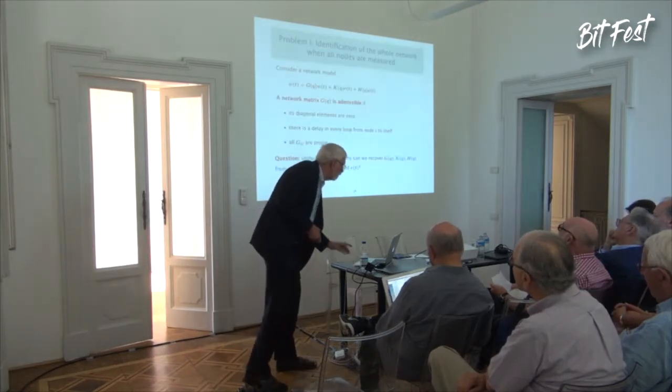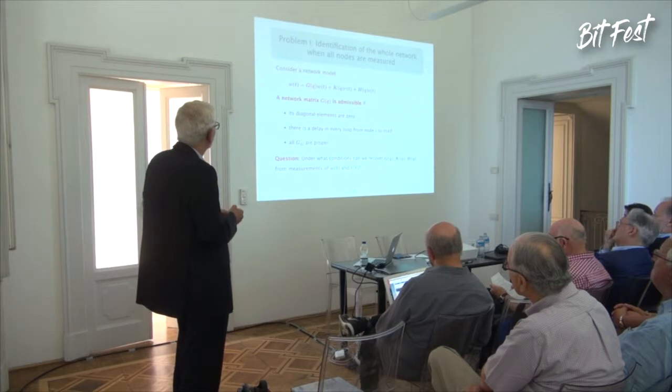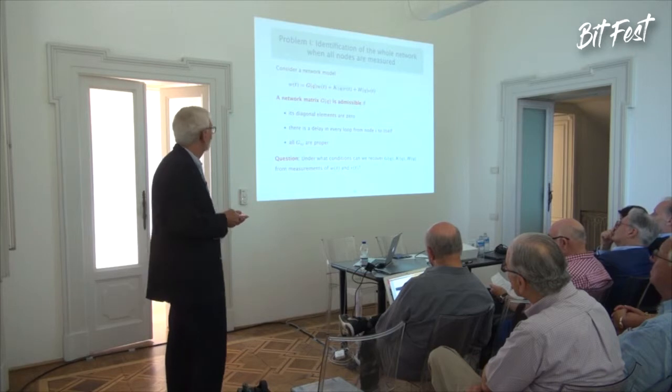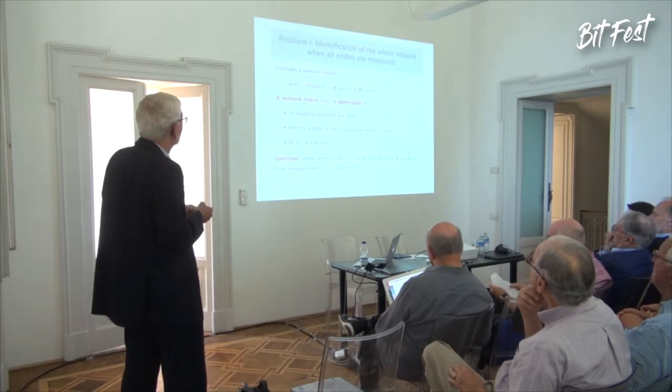For problem one, identification of the whole network, we assume we measure the whole vector of W signals and the external excitations where they are present. The network matrix G is admissible if its diagonal elements are zero, if there is a delay in every loop from node i back to itself, all G_ij are proper, and 1 minus G is a stability matrix. The question is: under what conditions can we recover these three matrices from measurements?